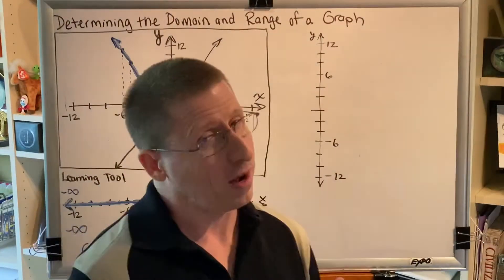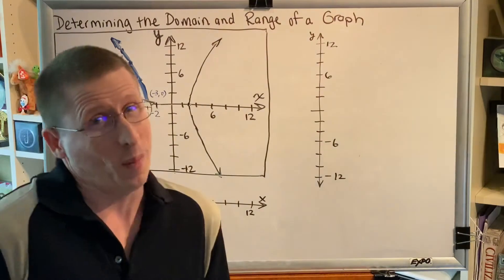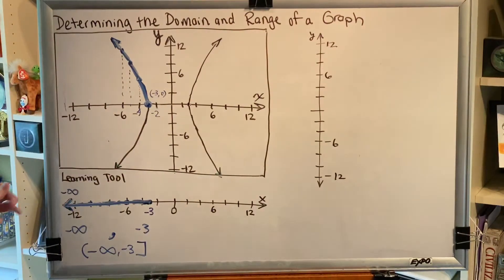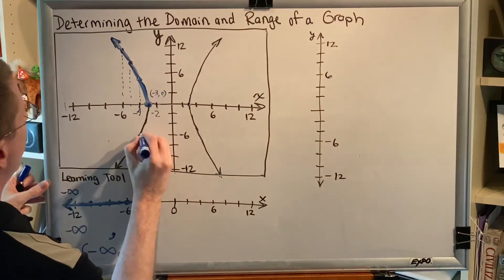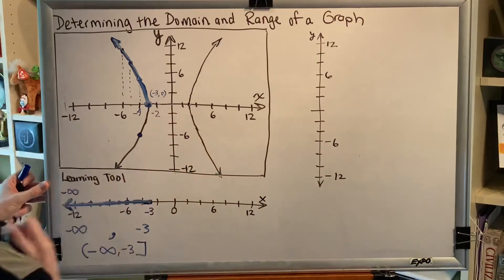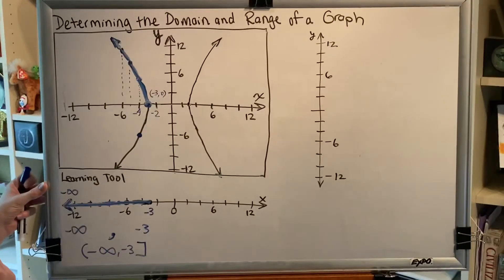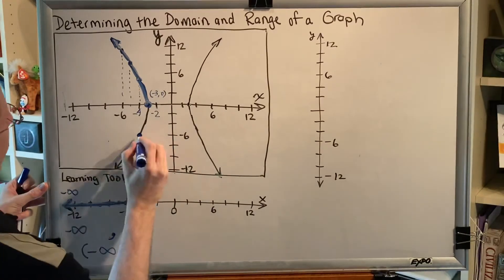Now you might be thinking, wait a minute, you only did the top. What about the bottom? Well, here's what's interesting about that. Part of the definition of domain is that if a number shows up more than once, we only keep one copy of that number. So this point right here, which has an x value of negative 4 would be graphed on our number line. But you can see we already have that shaded.